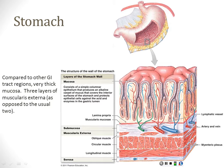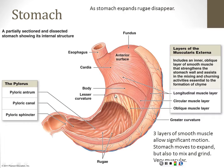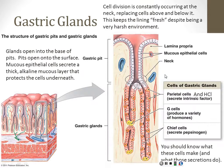We have this very thick mucosa with deep pits called gastric pits, and beneath that a submucosa with arteries, veins, lymphatics, and nerves. On the outside we have those three layers of smooth muscle we talked about last time: the oblique layer on the inside, the circular layer next, and the longitudinal layer on the outside. Because this mucosa is very specialized to the stomach, we spend a little more time on it.